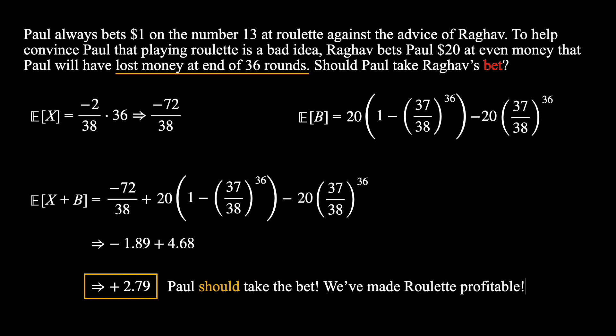While Raghav has been trying to convince Paul that playing roulette is a bad idea, he himself has made an even worse decision — and so we've found a way to help make Paul's roulette profitable. Did you expect this to be the answer? Did you also side with Raghav initially, thinking the bet would convince Paul roulette was a bad idea? Let me know in the comments below. As always, thank you for watching, and don't forget to like, subscribe, and share!